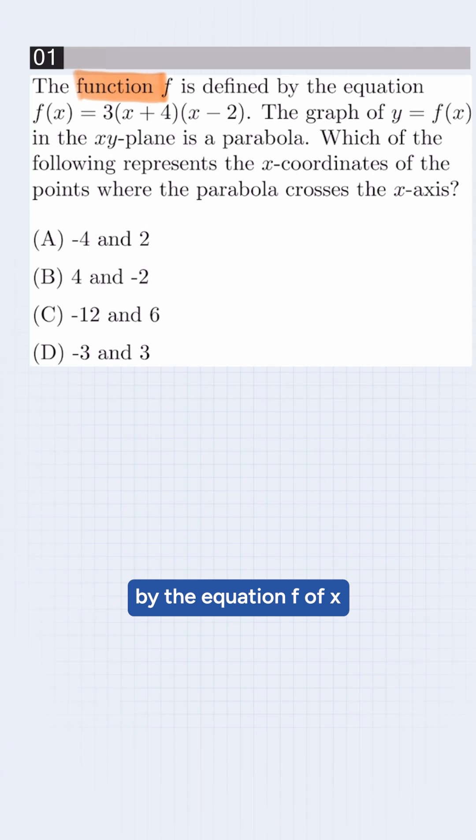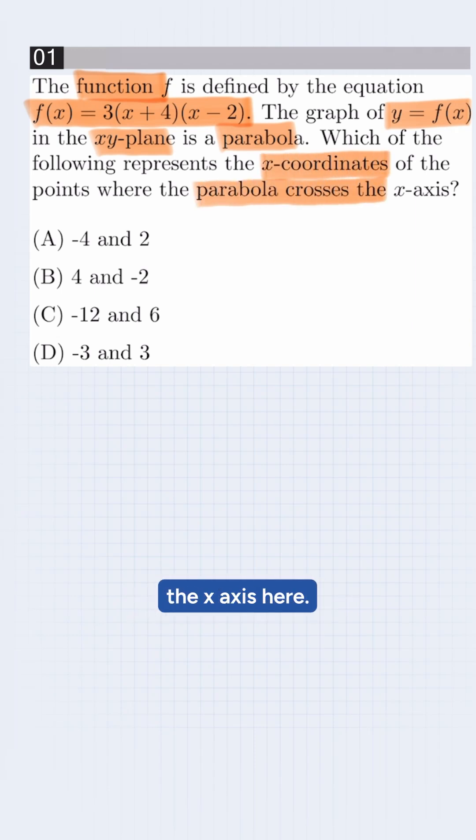Here, the function f is defined by the equation f(x) = 3(x + 4)(x - 2). The graph of y = f(x) in the xy-plane is a parabola. Which of the following represents the x-coordinates of the points where the parabola crosses the x-axis?